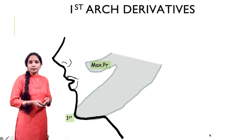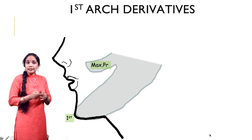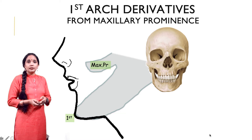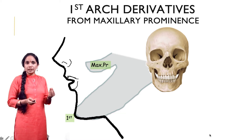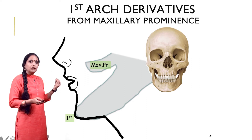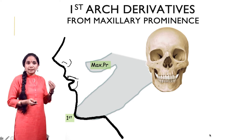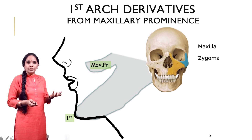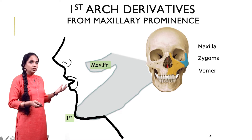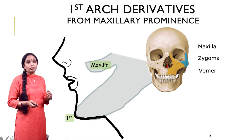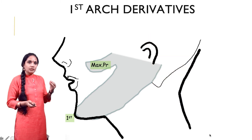What about the skeletal components? The cartilage of the first arch, as you know, has a specific name — it is called Meckel's cartilage. The maxillary process, even though it has a cartilage in its core, does not have a specific name, but it gives rise to three bony structures in the face: the maxilla, the zygoma, and the vomer. So these three bony structures are given off by the maxillary prominence of the first arch.